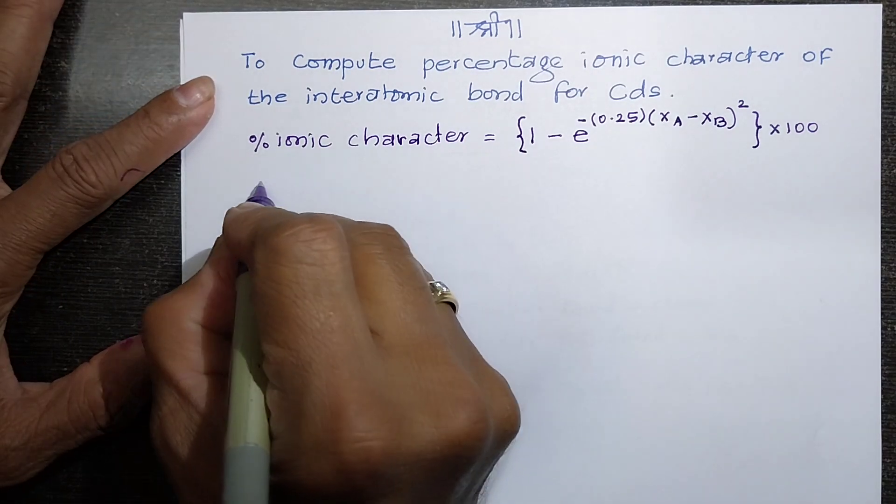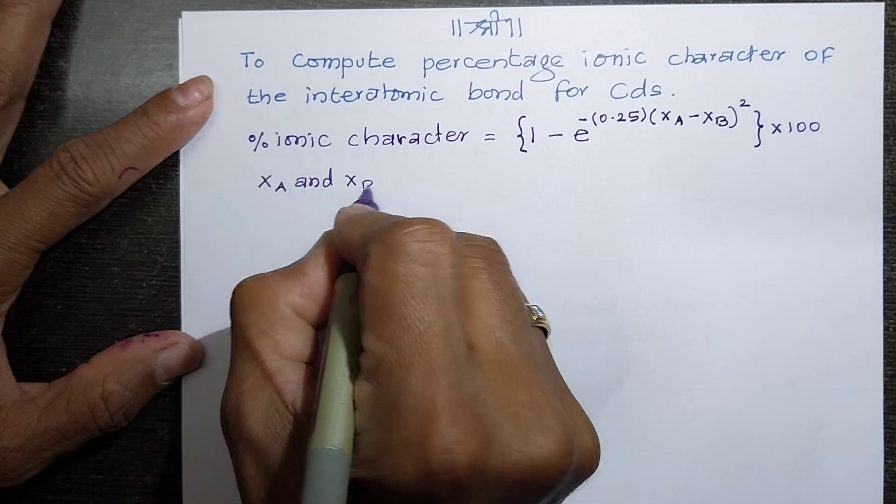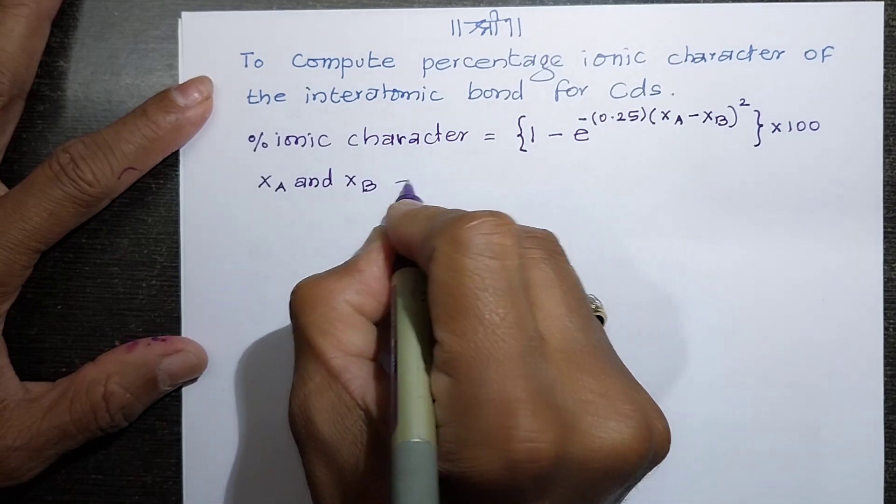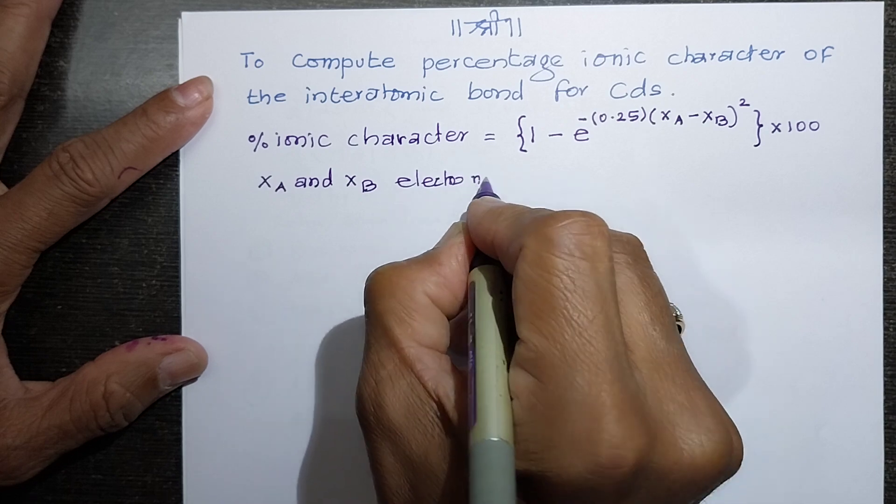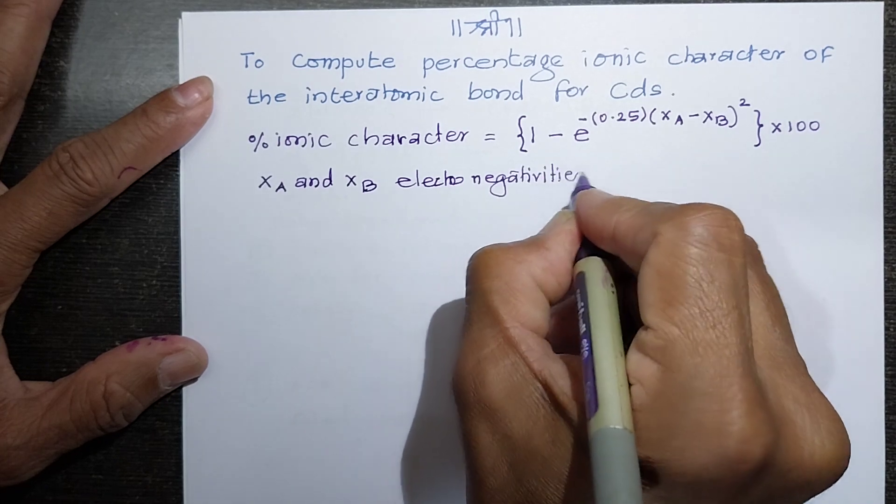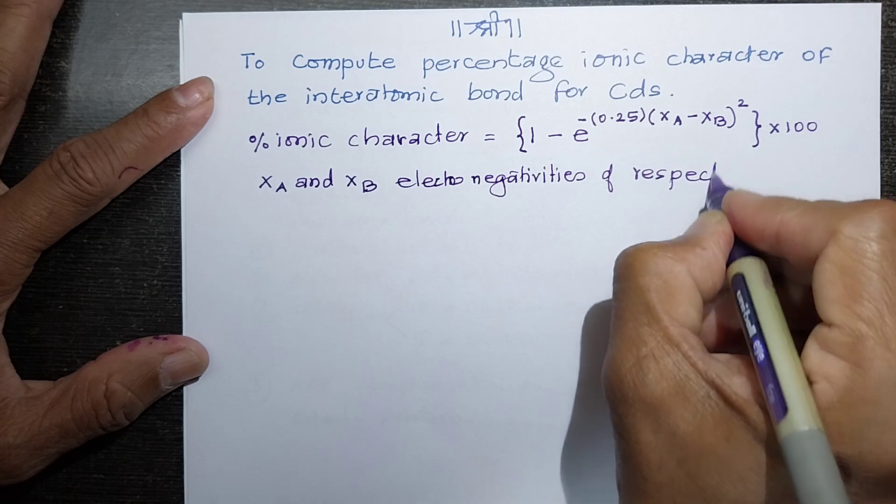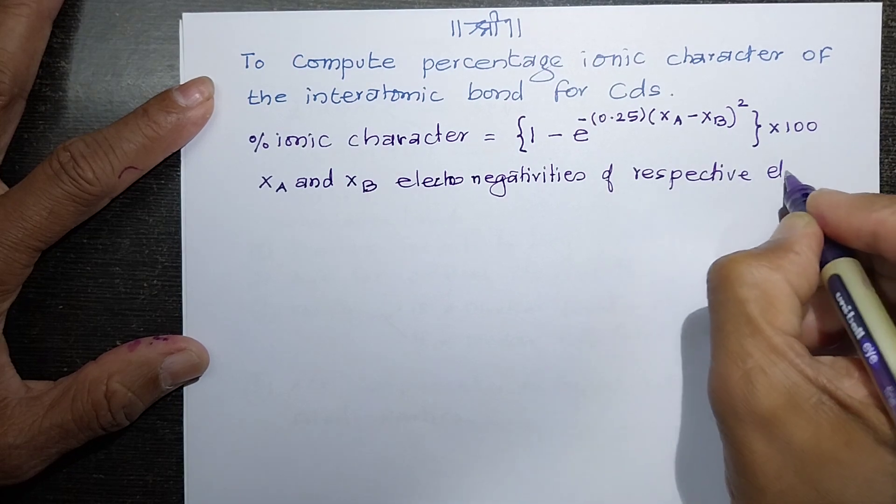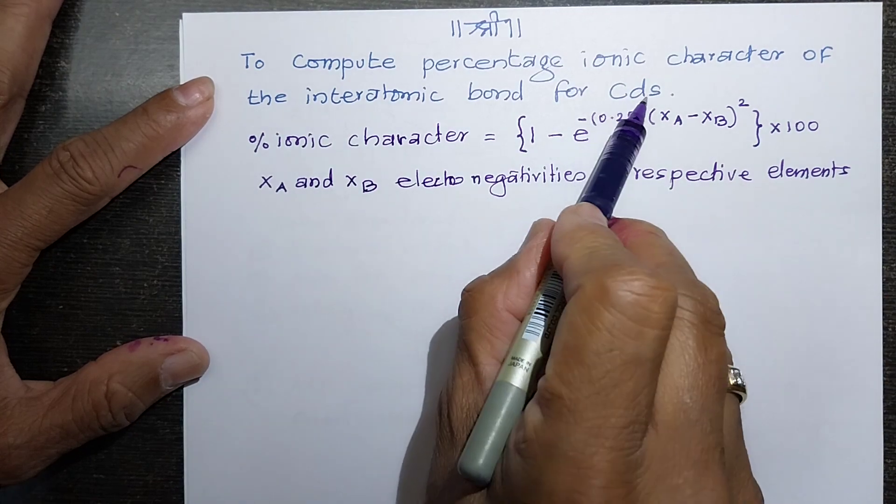Now the x_a and x_b here represent the electronegativity of respective elements. In this case the respective elements are cadmium and sulfur.